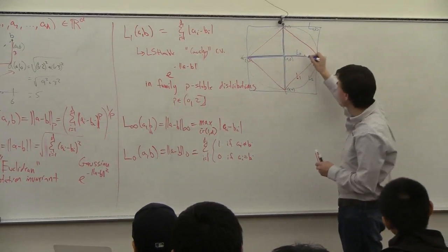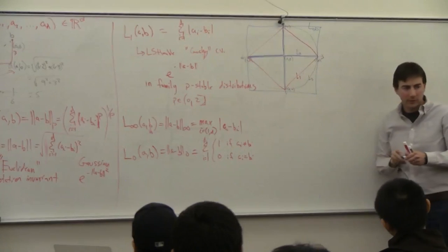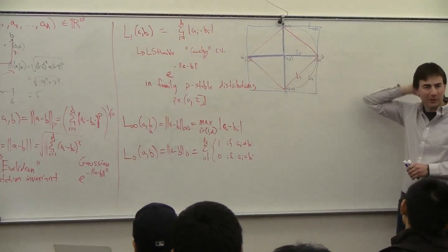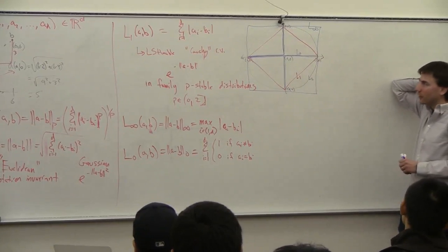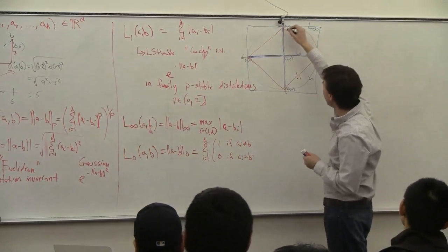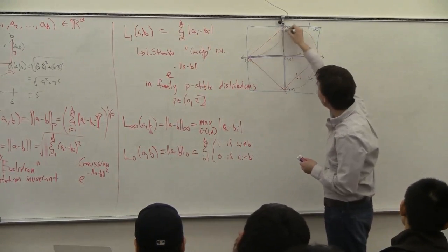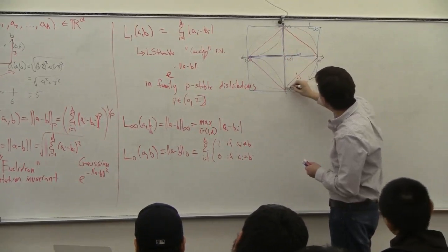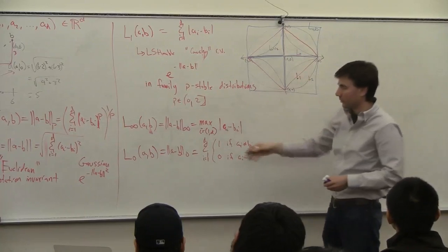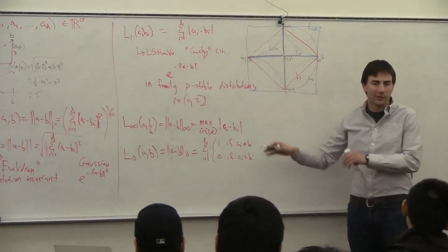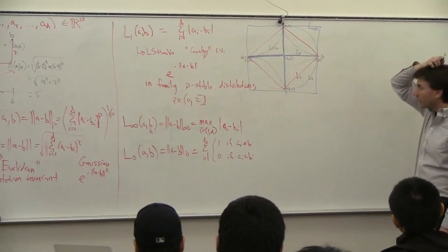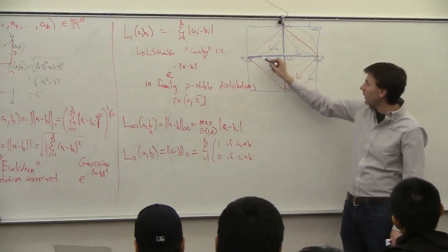So this is the L0 distance. This picture doesn't make as much sense in L0, but it gives you a sense of what you would do with something like the L1-half distance. The L1-half is going to look like this — it starts caving in here.